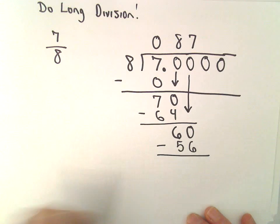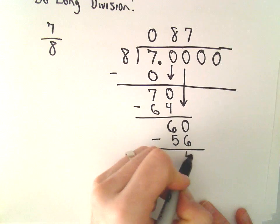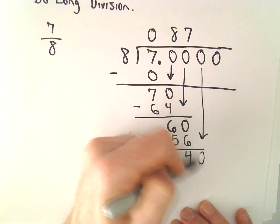And again, we can subtract: sixty minus fifty-six will leave us with four. Drop down our next zero.